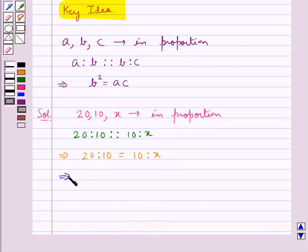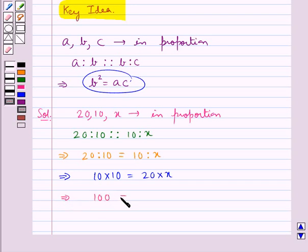And so, as they are in proportion, B square is equal to AC, which means that 10 into 10 is equal to 20 into X. Product of extremes is equal to the product of the means, which means 100 is equal to 20X.